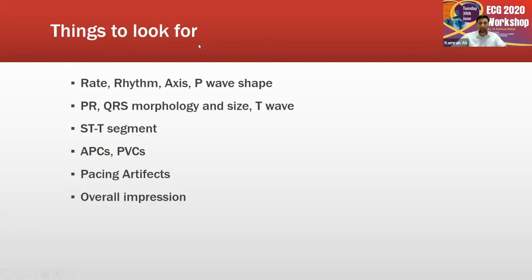Methodology-wise, when you open an ECG in front of you, I want you to spend some time and focus on each part of a small checklist: how does the rate look, how does the rhythm look, what is the axis, how does the P wave look, is there any variation in the PR interval, is the QRS wide or narrow, what is the size — is it showing hypertrophy, any ischemic changes in ST segments, any T wave inversions, any abnormal beats like APCs or PVCs, are there any pacing artifacts? In the beginning this may take a little longer, but once you develop a schematic approach to the ECG you won't be missing much of the diagnosis.